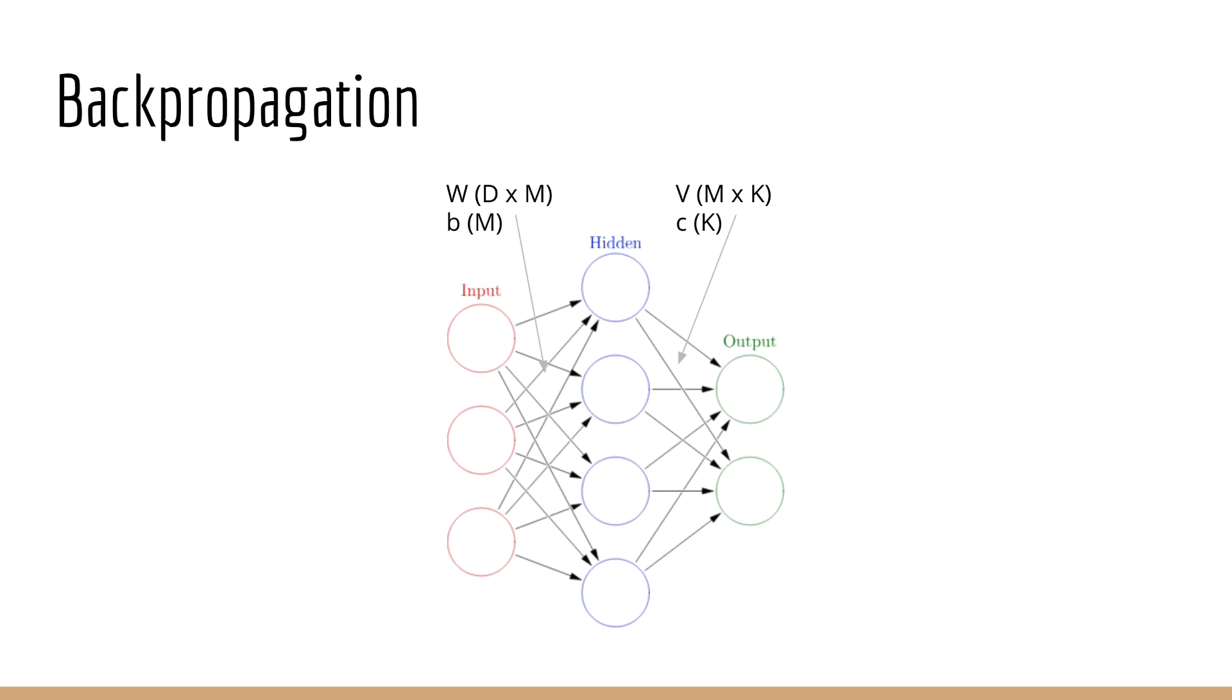Next, let's consider our neural network weights. In the following lectures, we're going to use w and b for the input to hidden layer, and we're going to use v and c for the hidden to output layer. So, w is a matrix of size d by m, while b is a vector of size m. V is a matrix of size m by k, while c is a vector of size k.